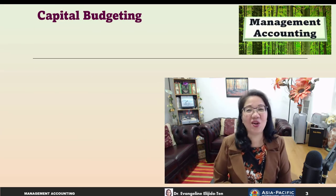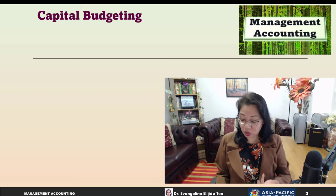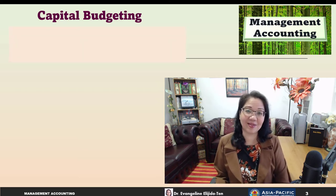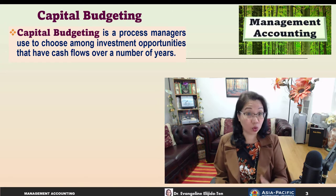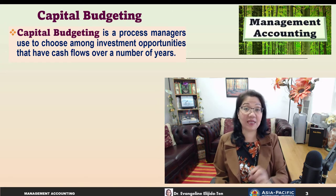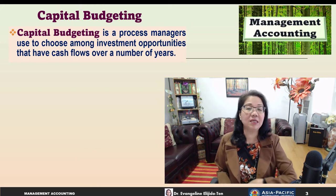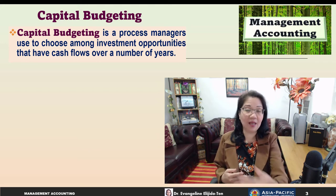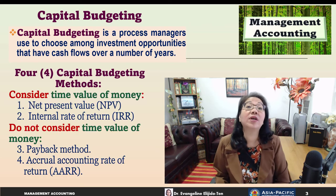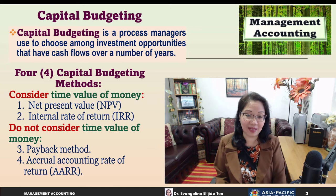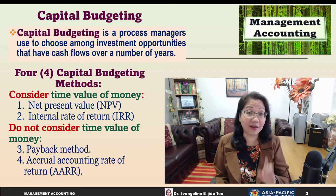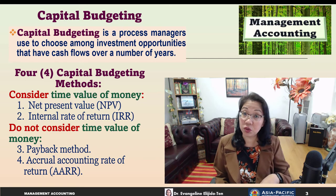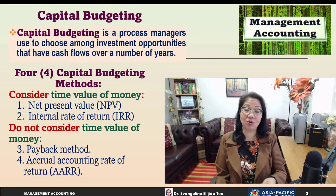Before we dive into the learning objectives, I'd like to introduce you to what capital budgeting entails. Capital budgeting is the process used by managers to choose among alternative investment opportunities that have cash flows spanning over a number of years — that means long term. There are four capital budgeting methods we will consider. The first two, net present value and internal rate of return (NPV and IRR), consider the time value of money, whilst the last two, payback method and accounting rate of return, do not consider the time value of money.